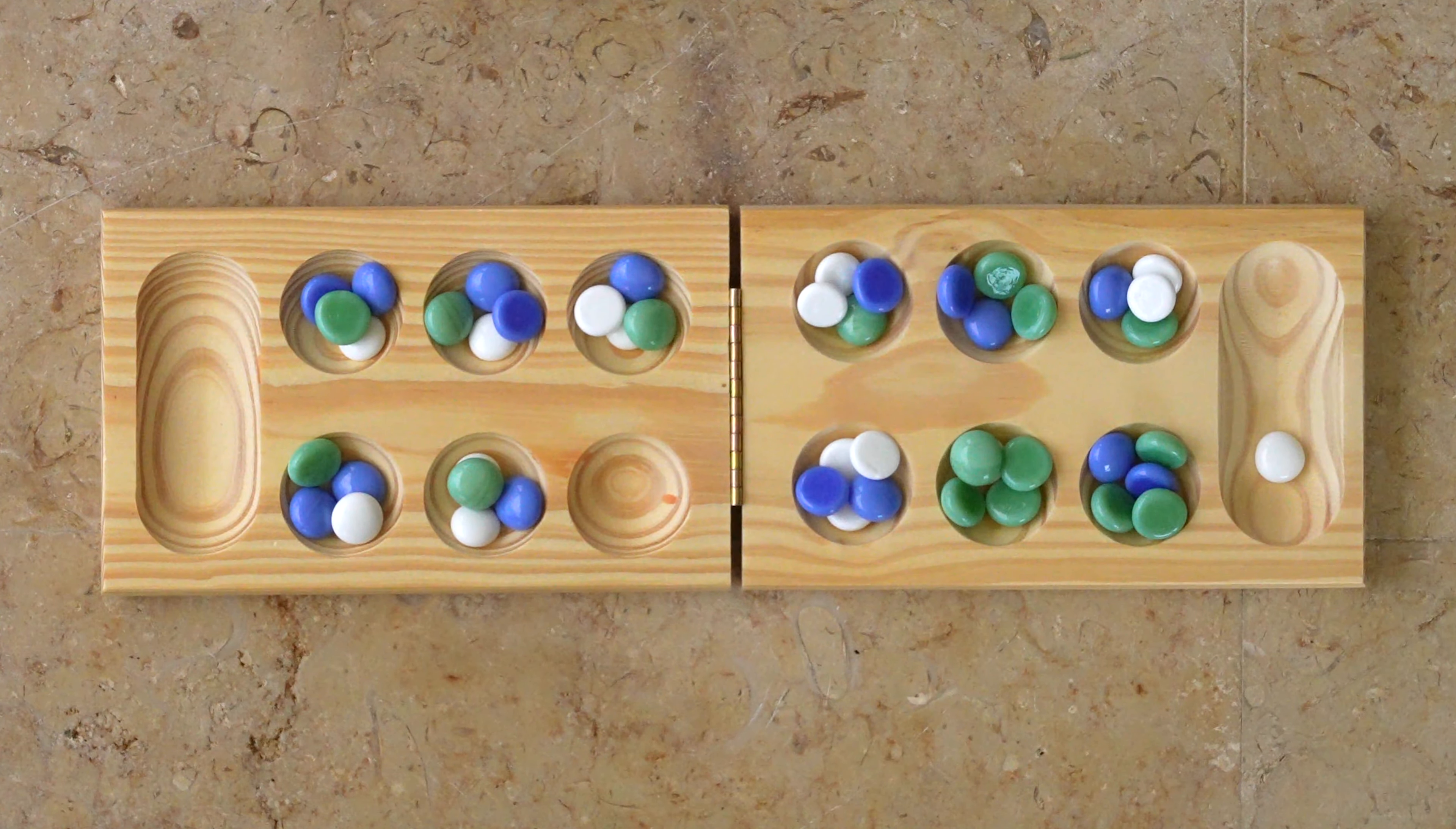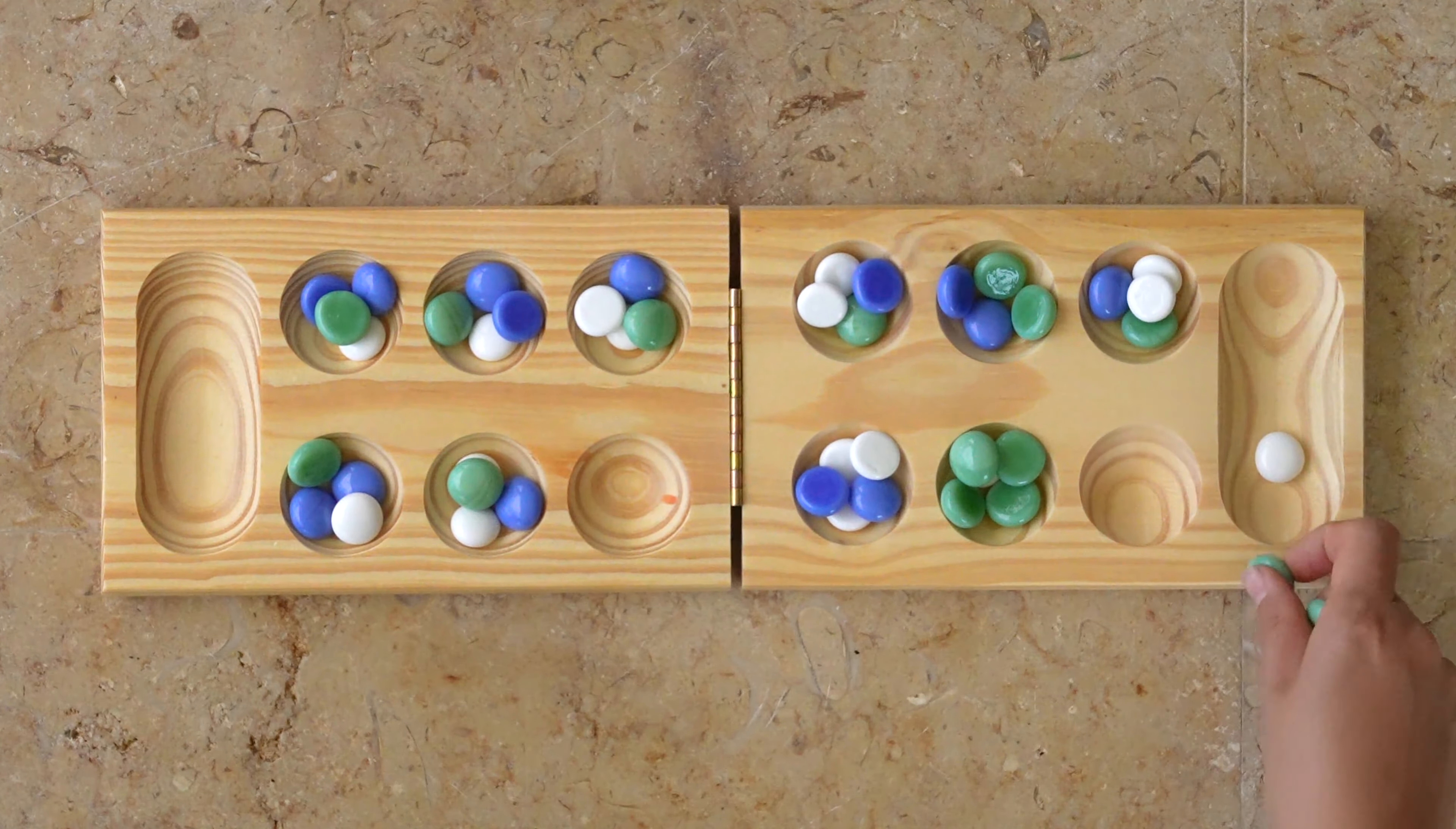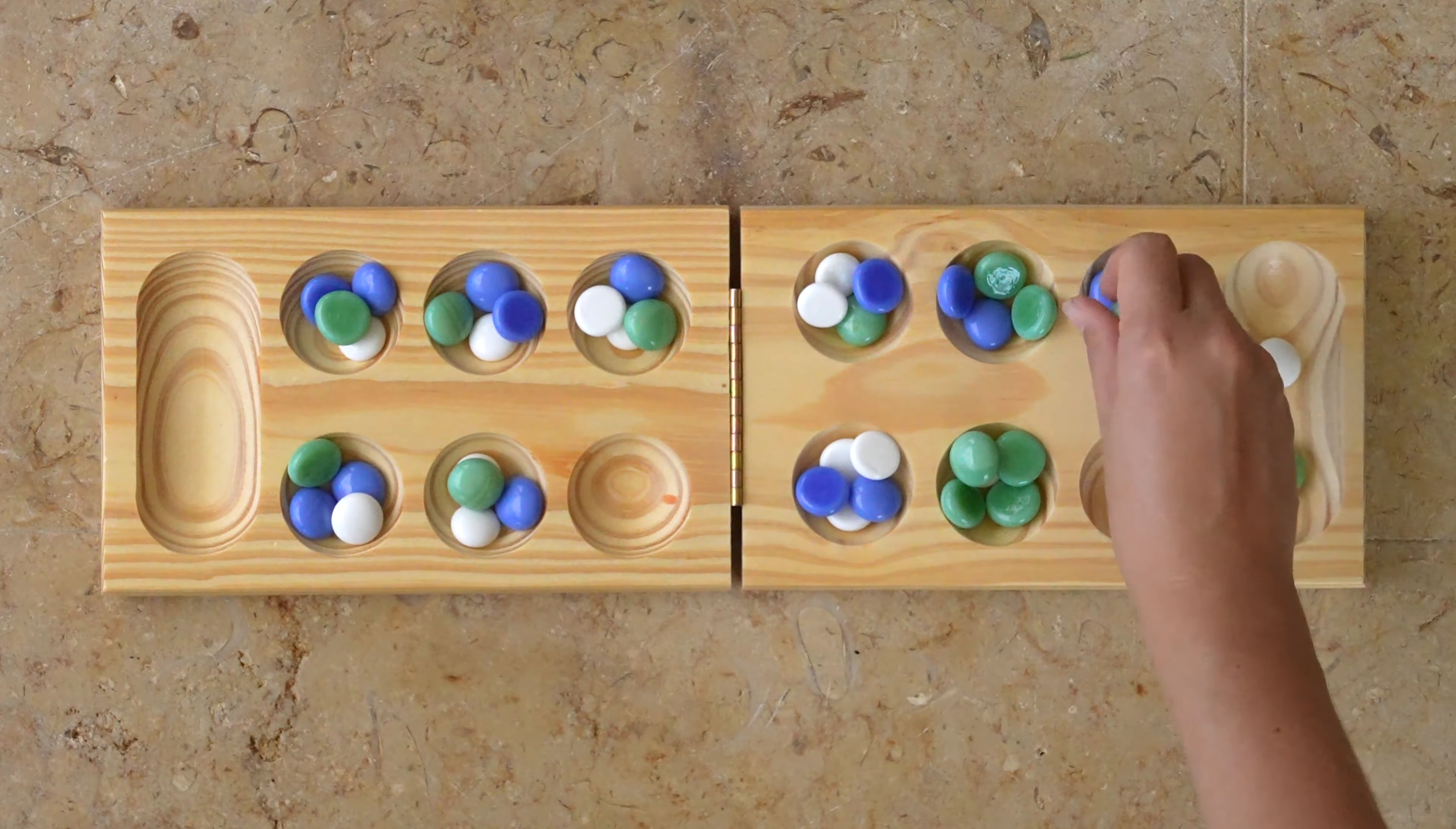When they get to the scoring cups, called Mancalas, they only put marbles into their own Mancala and skip the opponents if they get to it.